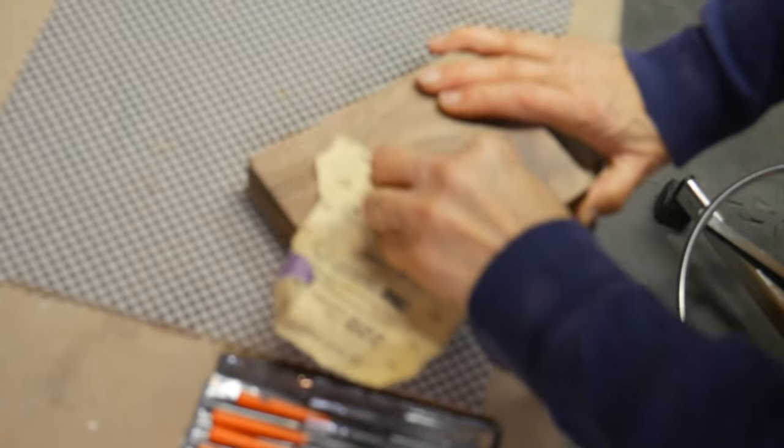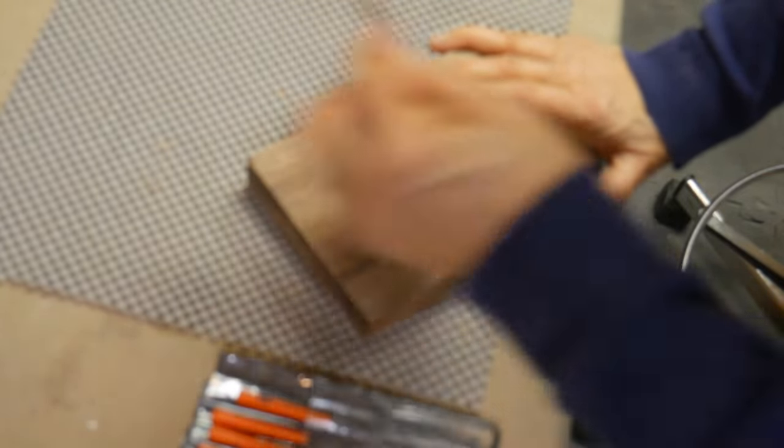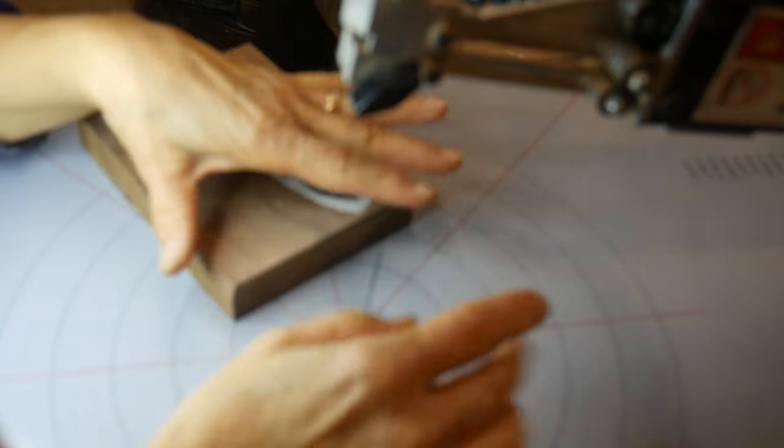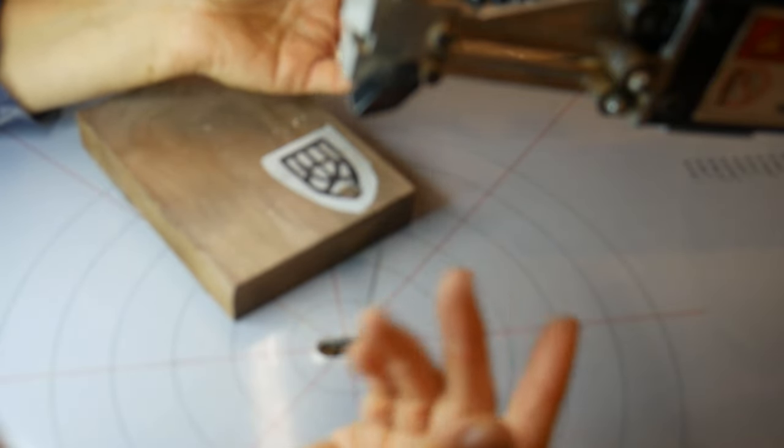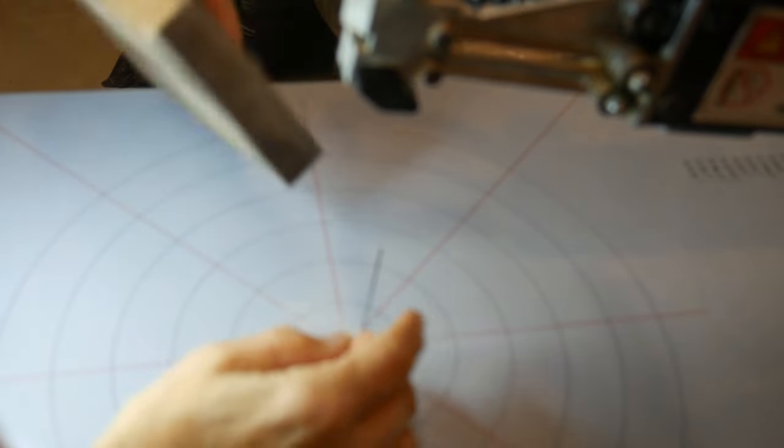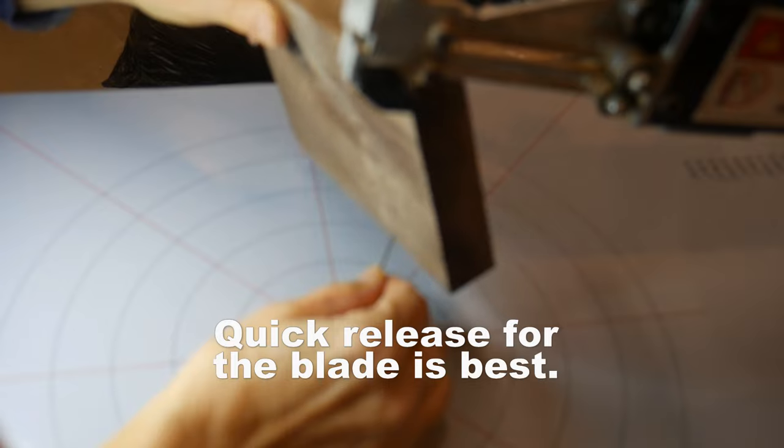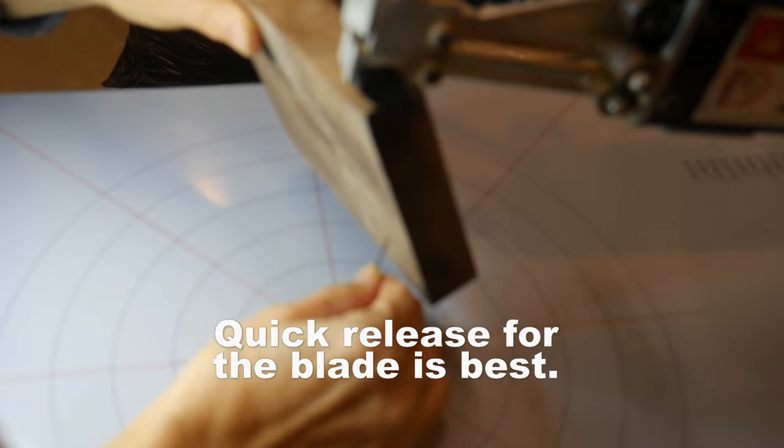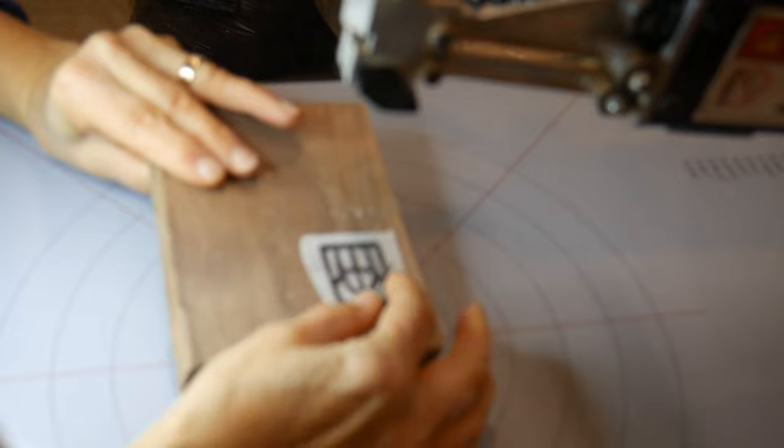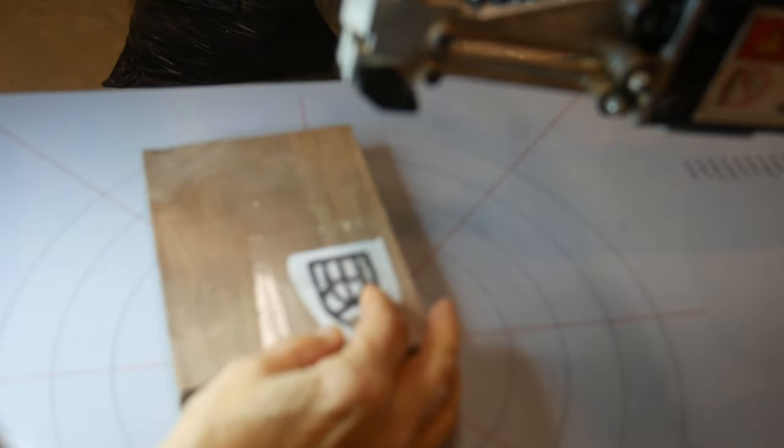Lightly sand the back where the exit holes are so that it's nice and smooth on your scroll saw. You can really use any type of scroll saw for this project, but one with a quick release on it will make things go a lot quicker. Always use a brand new blade for each new project and my blade of choice is a Pegas MGT5R.